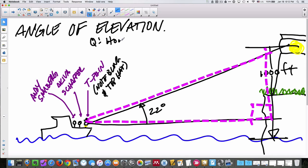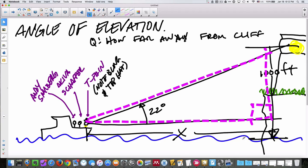And then the question would be, how far away from cliff or distance to cliff, et cetera. So we're talking about this horizontal distance. We're looking for X, for instance, and it's that distance right there. So from the boat to the cliff.